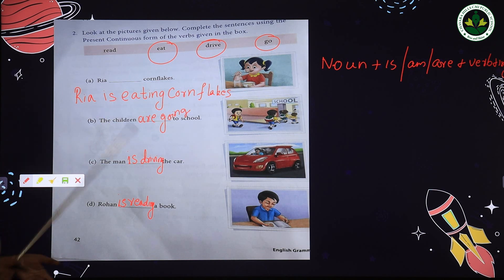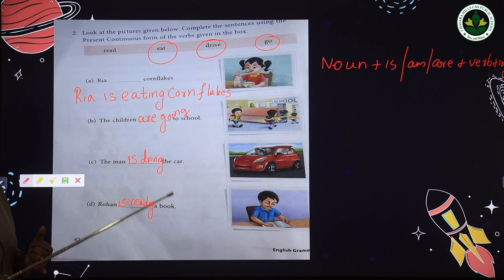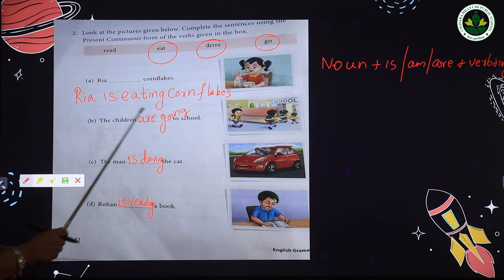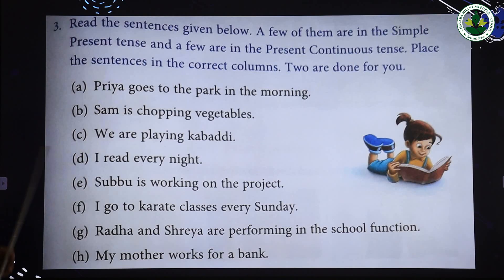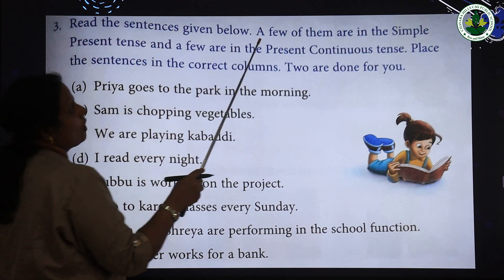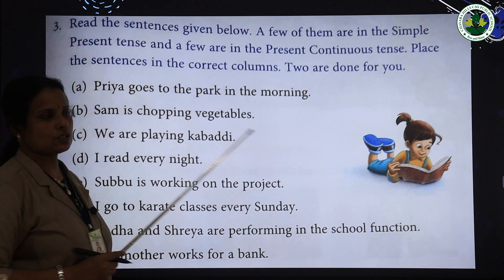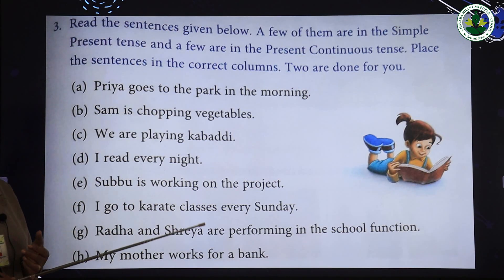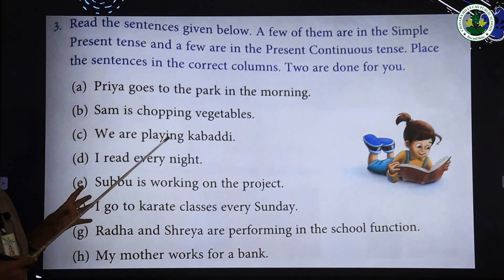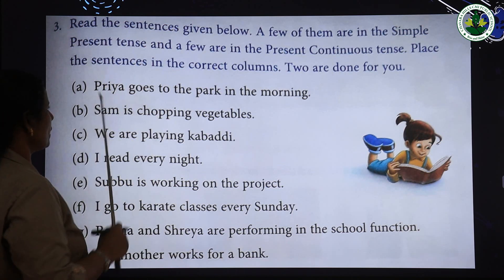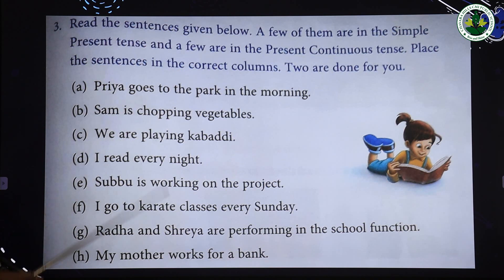To summarize: when forming present continuous tense, check the noun or pronoun. If singular, use 'is.' If plural, use 'are.' If the pronoun is 'I,' use 'am.' Then add the 'ing' form of the verb. The last exercise asks you to read sentences and write them in the correct column — simple present tense or present continuous tense.